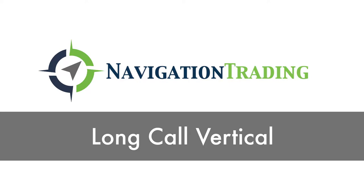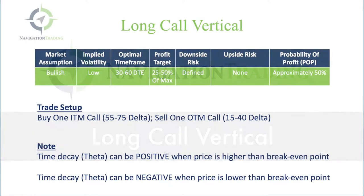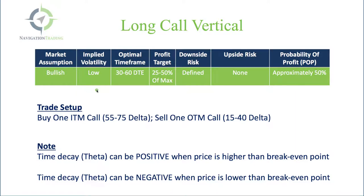In this video, I want to show you how to enter a long call vertical spread. As you see on the chart here, our market assumption when we put on this trade is bullish, meaning we want the stock to go up. It's best to put these on when implied volatility is low. The optimal timeframe, just like most of our trades, is 30 to 60 days to expiration.